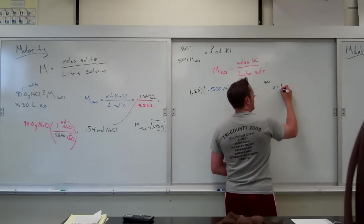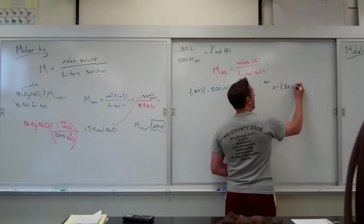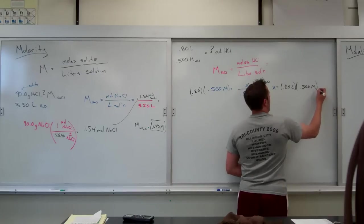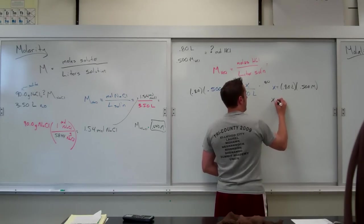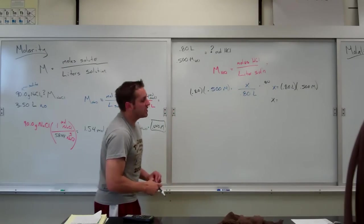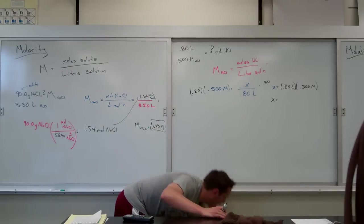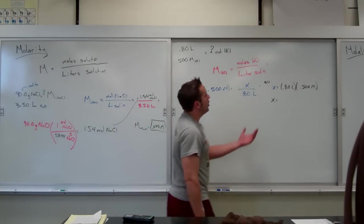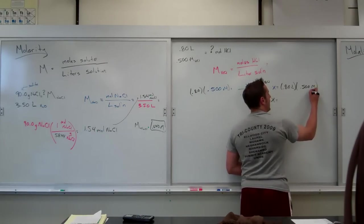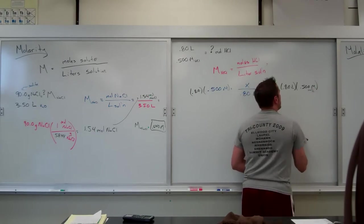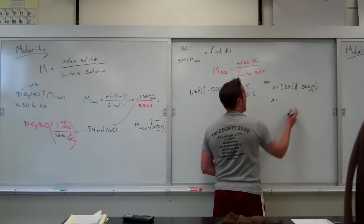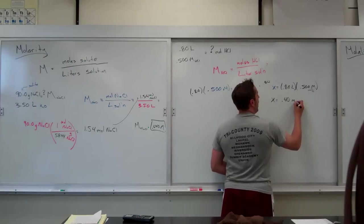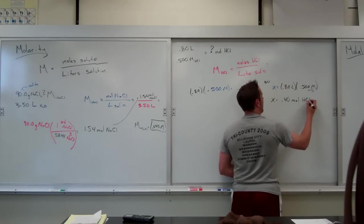And when I do that, I'll get 0.80 liters times 0.500 big M. The reason I'm not the biggest fan of this style of solving is it becomes something you have to memorize to see how your units go. You have to remember that big M is moles over liters, right? And then that liters would cancel so that you would get half of 0.8, which is 0.40, and that would be your moles of HCl.